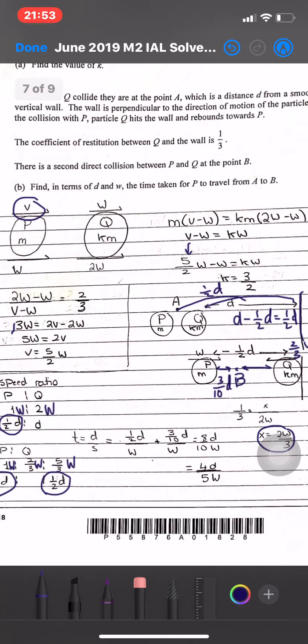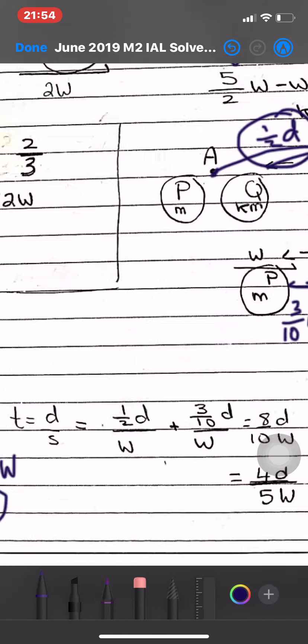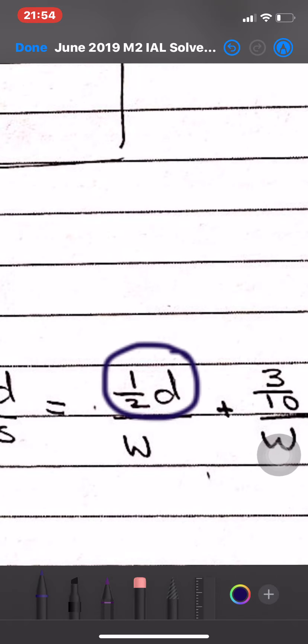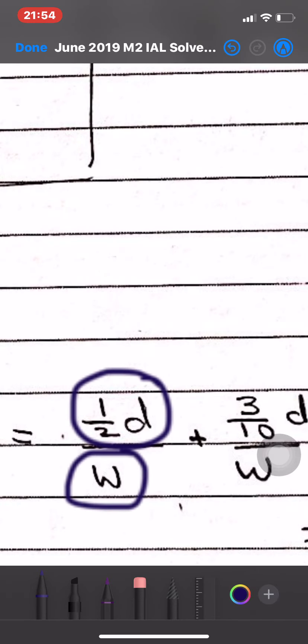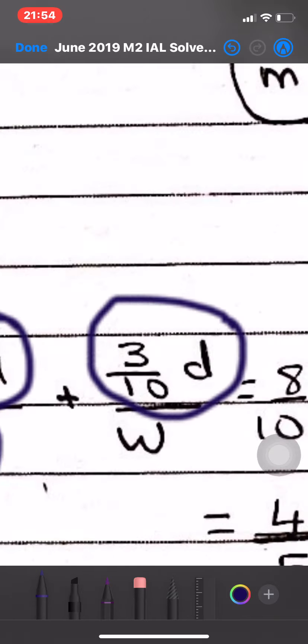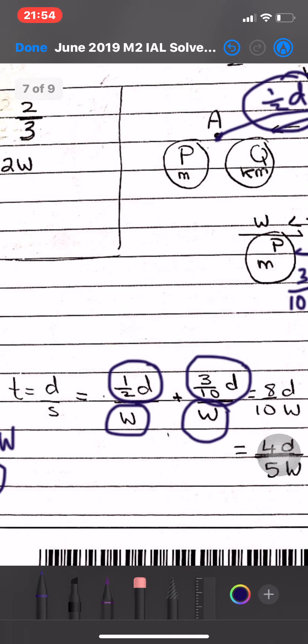We know that total time equals distance over speed. We have time from the first part A, so we need the time for the half D. The time for half D is distance over speed. This is the first part. The other part is the distance 3 over 10 D.